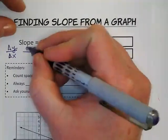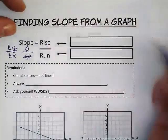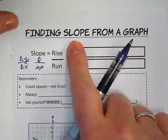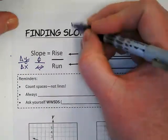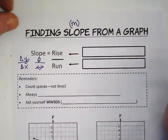Rise always goes up or down and run goes left or right. And when we're looking at finding slope, I want you to keep in mind we will be dealing with that equation, Y equals MX plus B, and M is the slope.